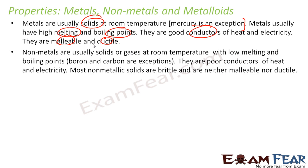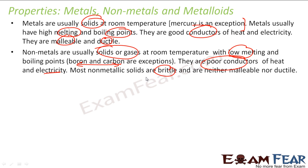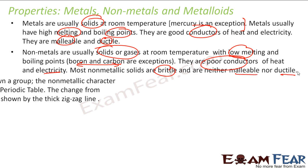Nonmetals are generally solid or gas at room temperature with low melting point and boiling point — here also we have exceptions, like boron and carbon. They are not conductors of heat and electricity — here also we have an exception for graphite. And most of the nonmetals are brittle; they are not malleable or ductile.